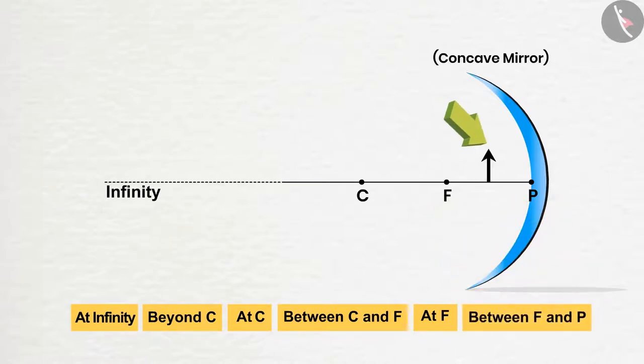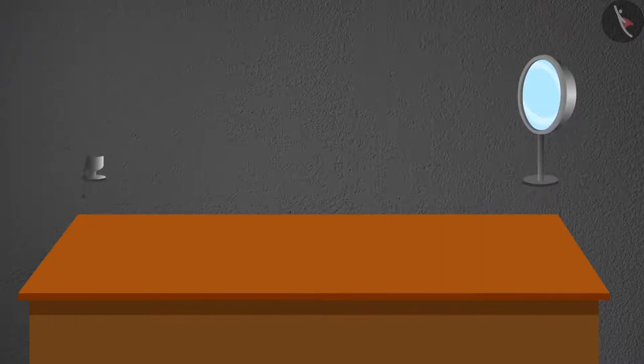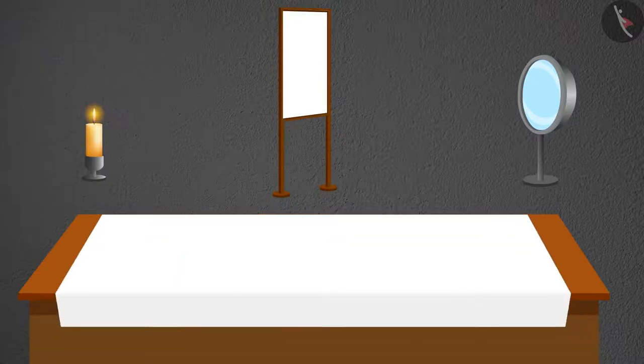So let us see what will be the effect on the image when we place the object at these six positions. To perform this activity, we need a concave mirror, a stand, a candle, a small white screen, and a long strip of chart.